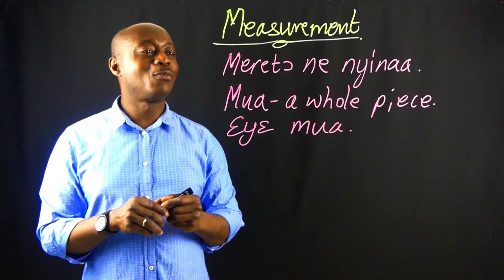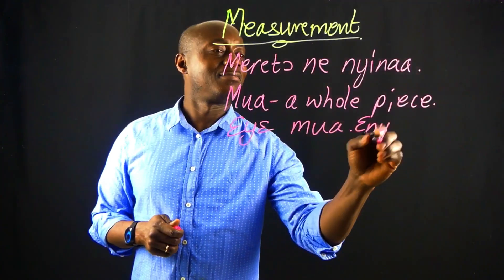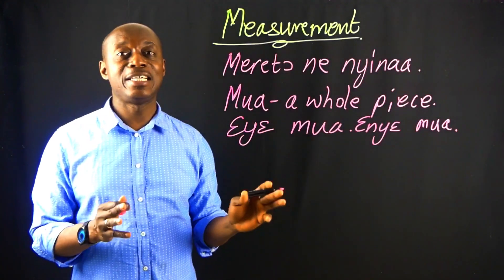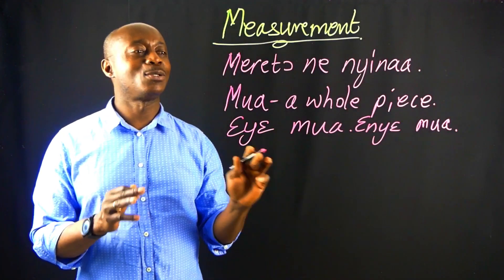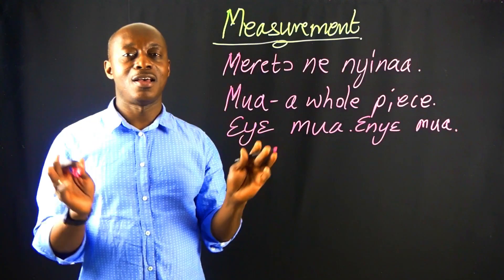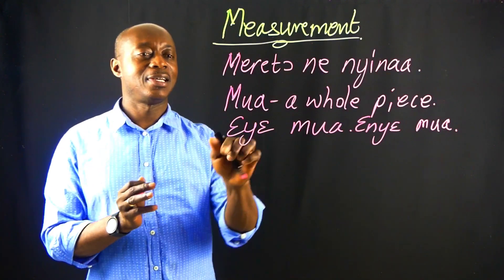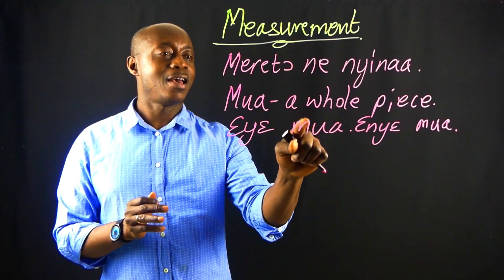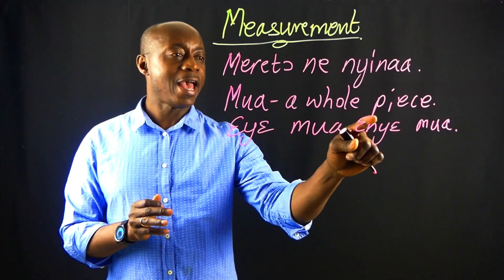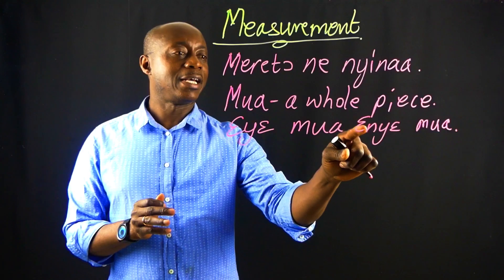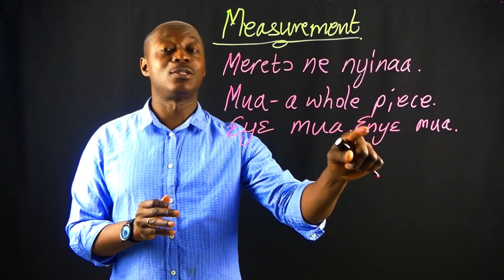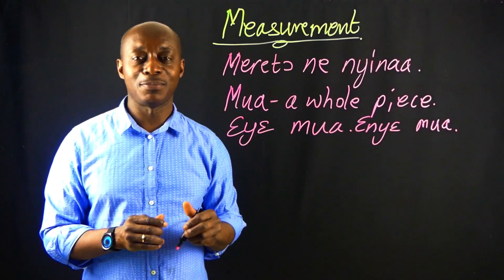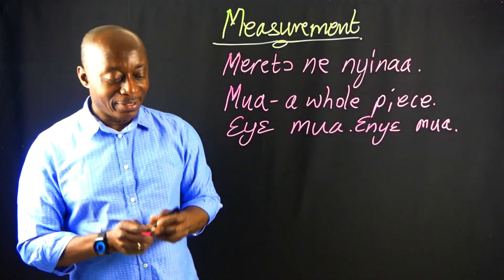If it is not a whole, then we say EYE MUA, meaning it is not a whole piece. So EYE MUA means it is a whole, and EYE MUA means it is not a whole. That is the difference between them.